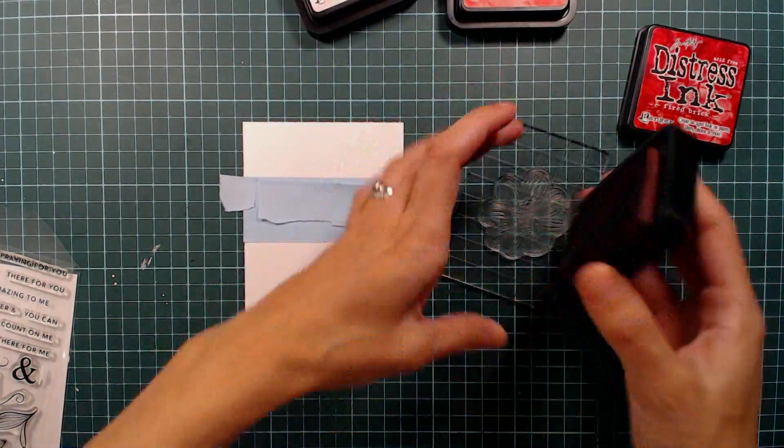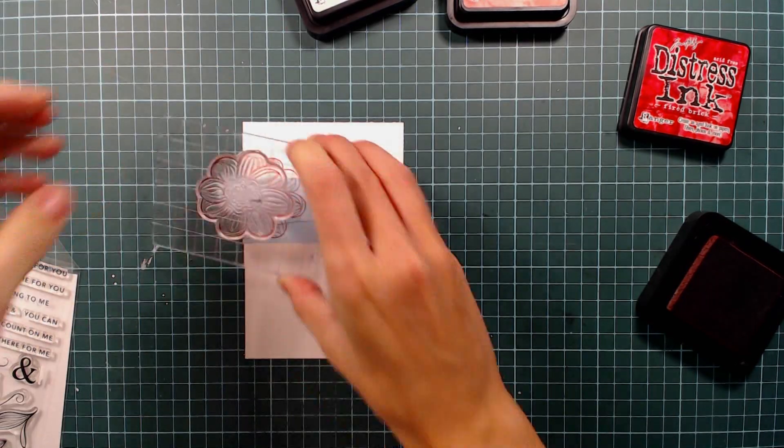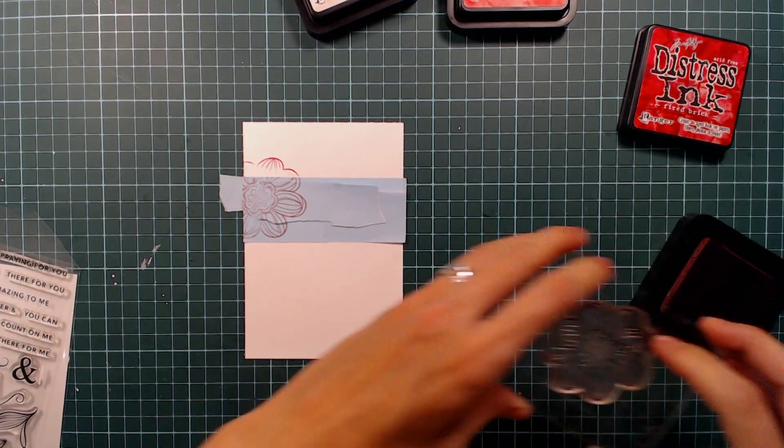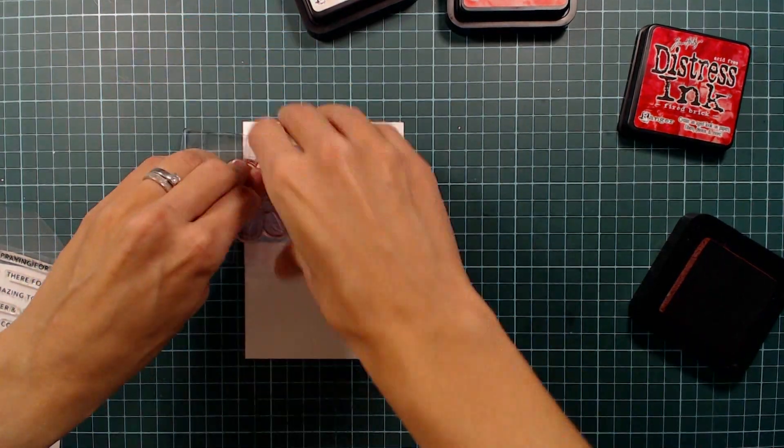I just want the flowers to peek out from behind the white space and therefore I'm making sure I only show a small section of the flower. I'm also stamping a few of the other complementary flowers and swirls from this set.